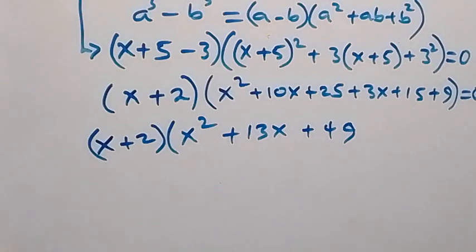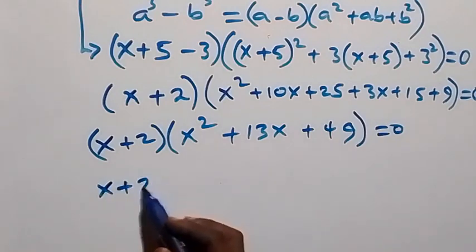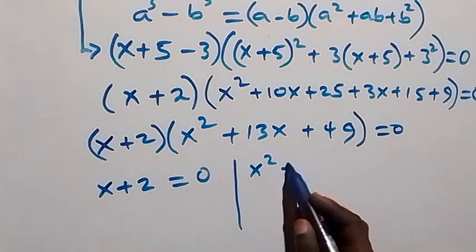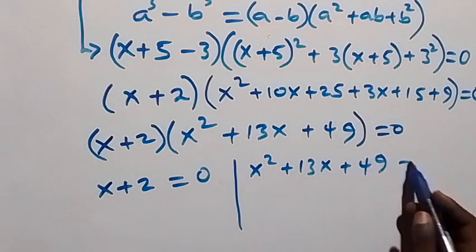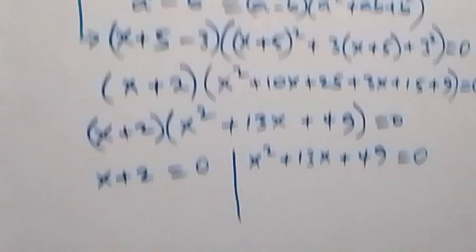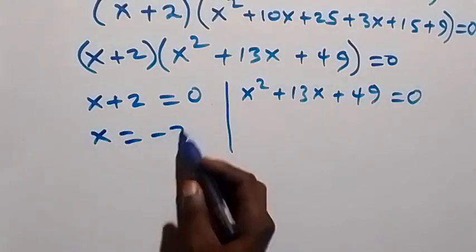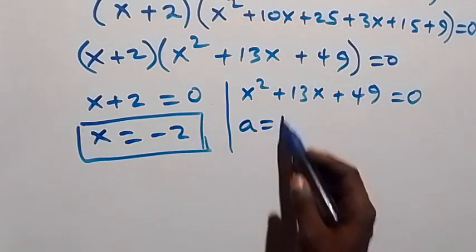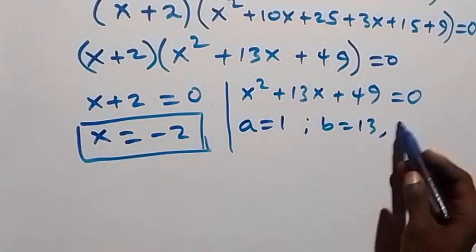Setting each factor to zero gives two cases: x plus 2 equals 0, giving x equals minus 2, which is also a real solution. And x squared plus 13x plus 49 equals 0, a quadratic where a equals 1, b equals 13, and c equals 49.